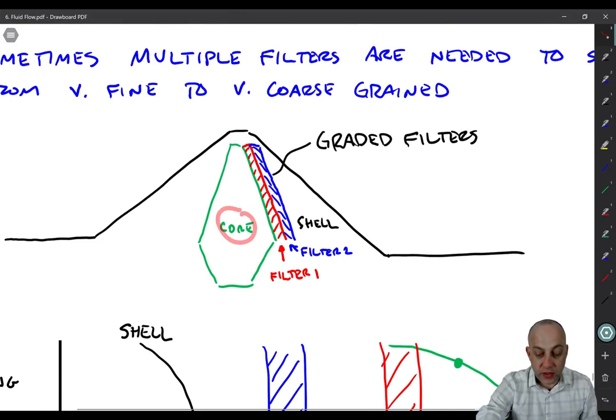So here's the core, here's the shell, here's the filter one. Then filter two will basically satisfy the filter criteria for filter one as a base material. And then the shell will satisfy the filter criterion for filter two as a base material. So we do this sort of sequential application of Terzaghi's filter criterion.